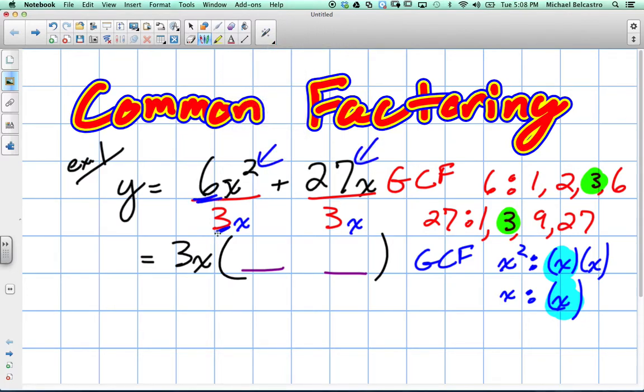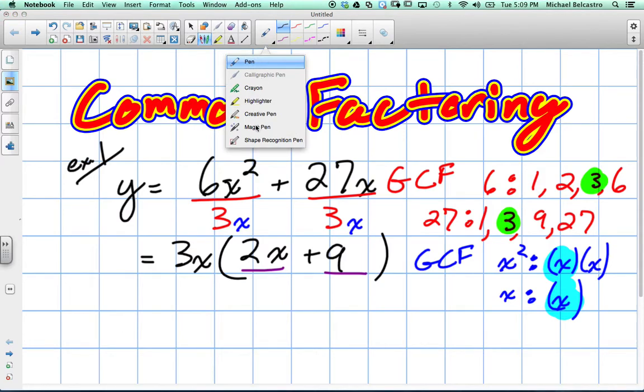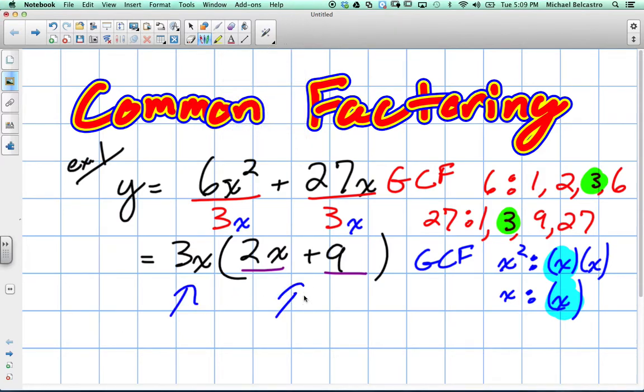And what's going to go into these places here are essentially division of these. So what is 6 divided by 3? 2. And x squared divided by x? Just x. And what is positive 27 divided by 3? 9. So you'll say plus 9, and x divided by x? Well, technically it's 1, but we don't need to write 1 in because we don't multiply. So this is it. This is our common factor.